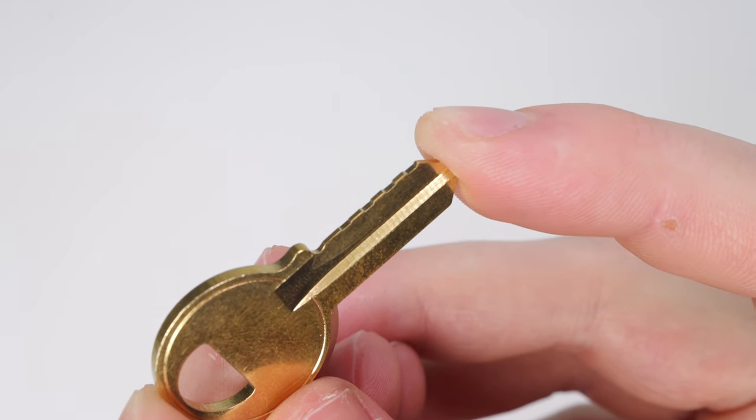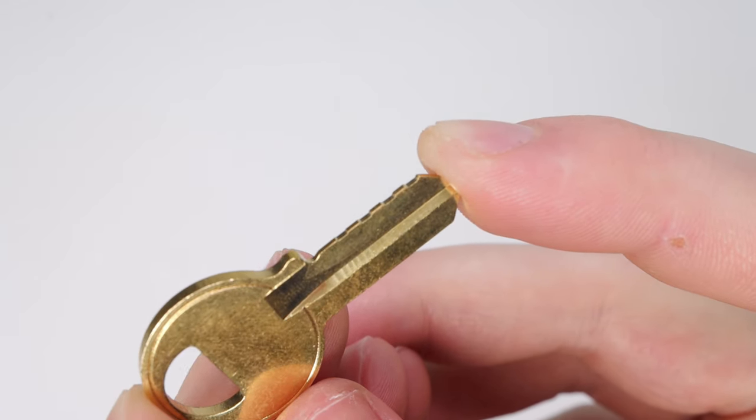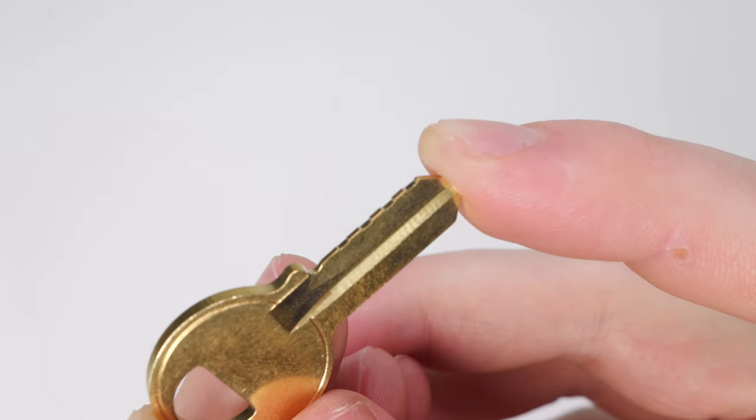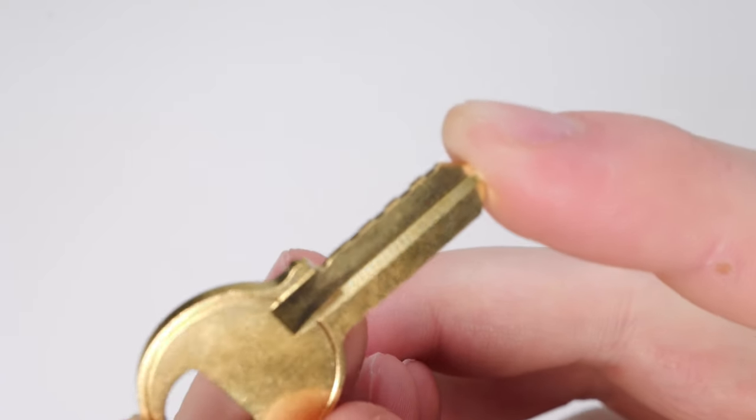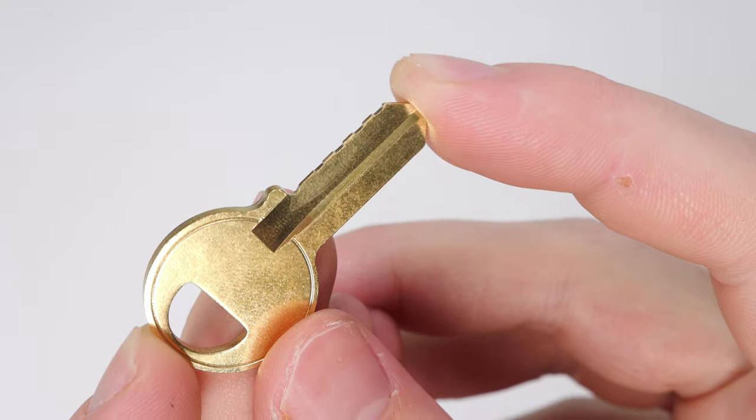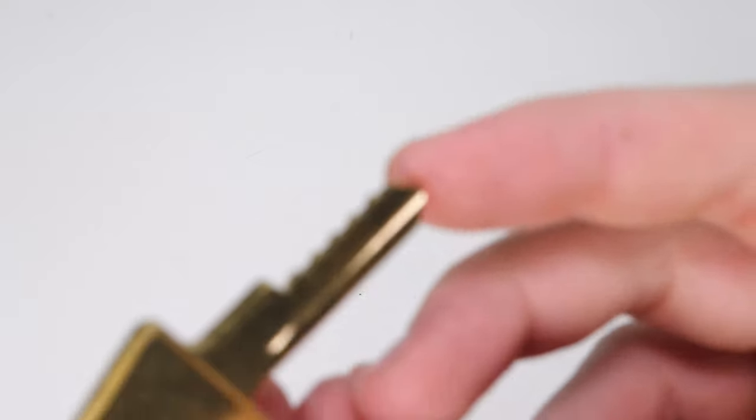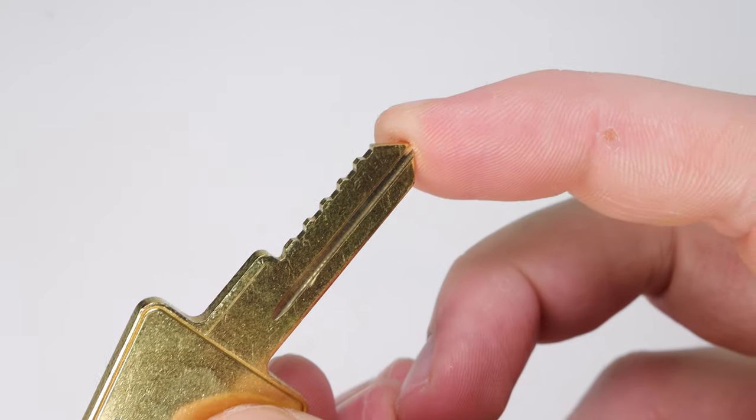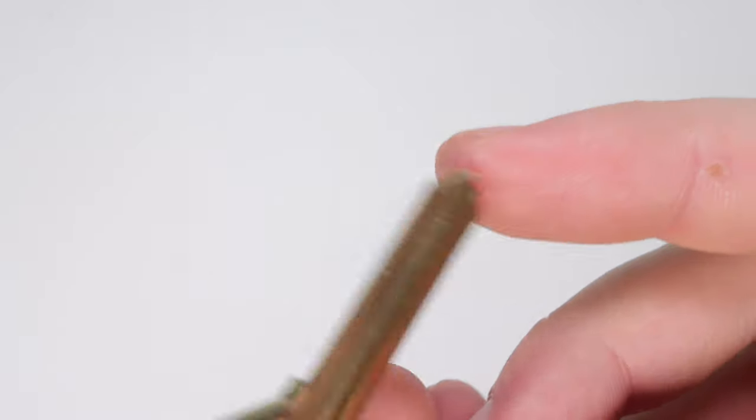Oftentimes when many people are first starting out in Locksport, they'll get a key that they have bought on eBay. You can see that it has only shallow cuts going all the way across. You can see this on this Master Lock M1 key, and I have a few other keys I can share as well. I have an American Lock AM3 key, and sometimes you can see it just as a blank itself.